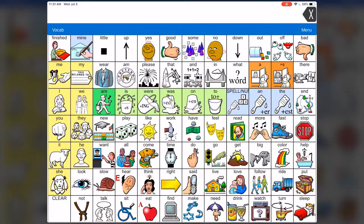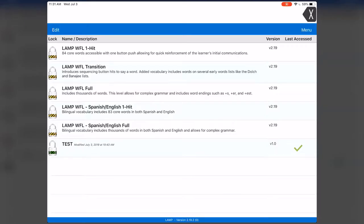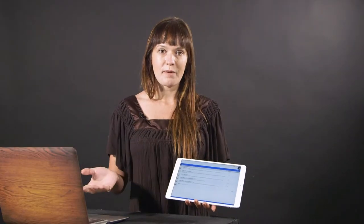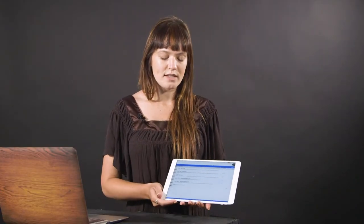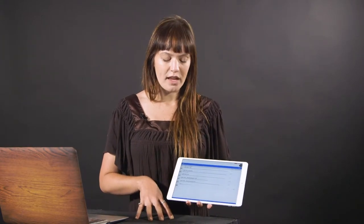It's been shown that utilizing these features allows an individual to communicate more quickly and without even looking at the app in some cases once they become incredibly proficient. There are a few different vocab options available within LAMP. All of the options are going to use PRC's Unity Language as their underlying language system. However, you can decide whether you want to use a one hit, a transition, or the LAMP Words for Life full. There is also a Spanish-English option available.